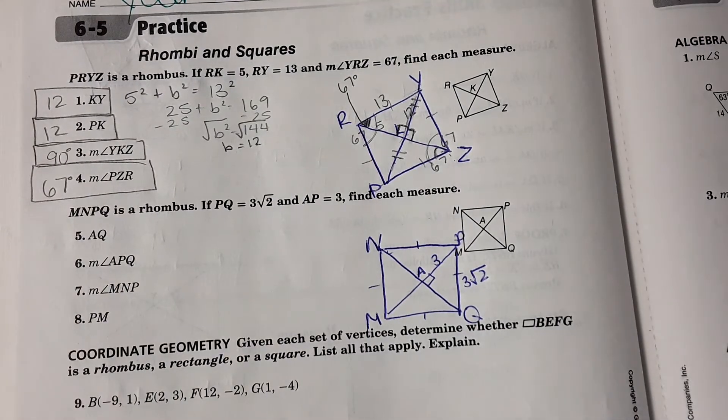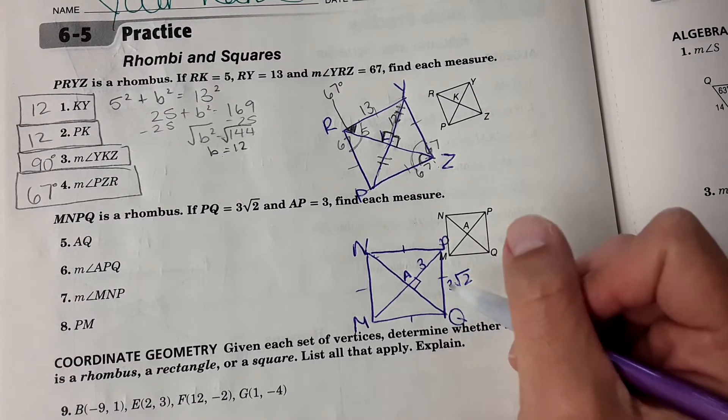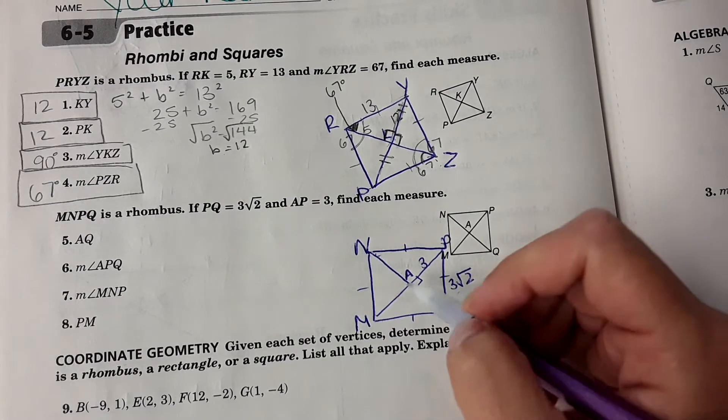It wants to know the length of AQ. They're using something you haven't learned yet.